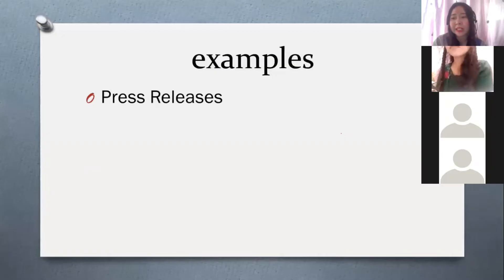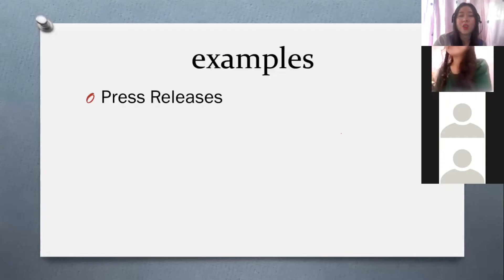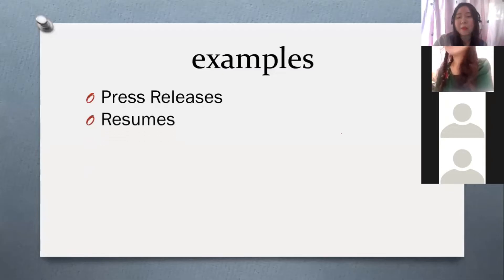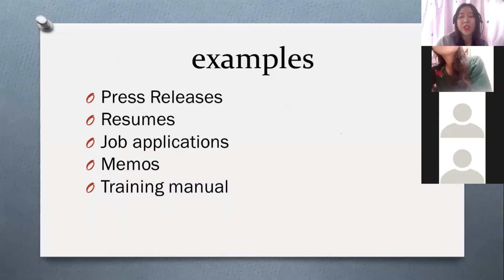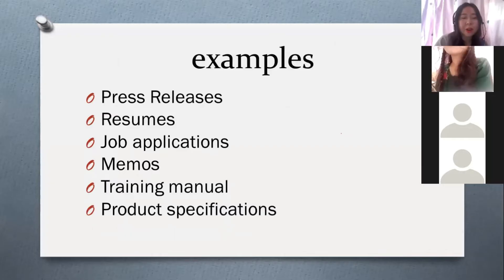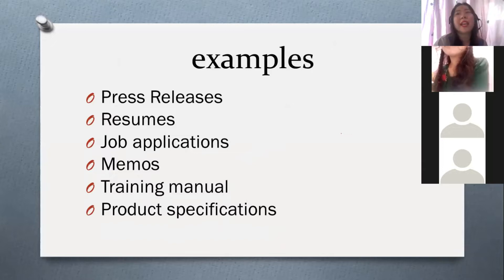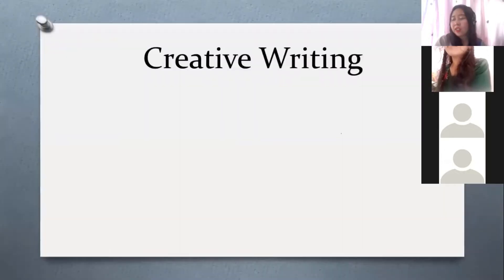There are actually a lot of examples of technical writing: press releases, resumes, job applications, memos, training manuals, and product specifications. For example, if you bought a certain product and want to know what that product is all about, that is product specification.